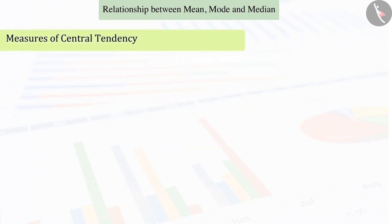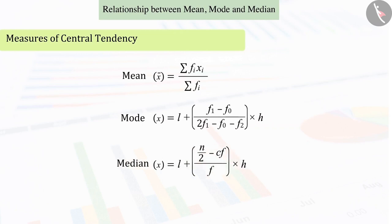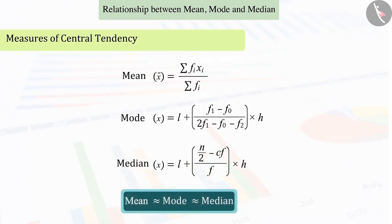We have so far learnt about the measures of central tendency of grouped data — that is, the mean, the mode and the median separately — whose values are almost equal to each other. Let's understand this by an example.